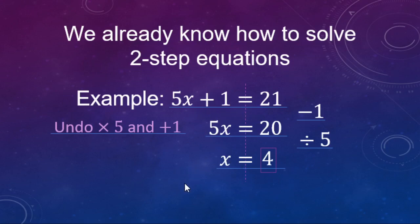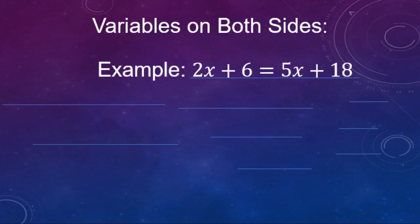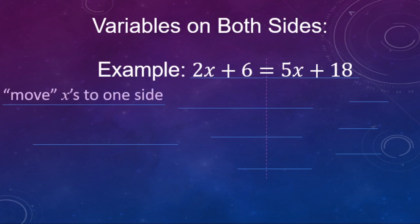Now that we've reviewed solving two-step equations, we'll look at an equation where we have variables on both sides. Here's our example: 2x plus 6 equals 5x plus 18. We have variables on the right-hand side and to the left of the equal sign, so we want to get the x's on one side — you can move them to either side.